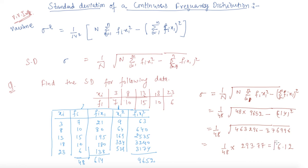You can also check the variance, which is the square of the standard deviation. In this way you can find the standard deviation and variance of the given data. In the next lecture we will discuss analysis of frequency distribution — stay tuned. If you have any doubts, please comment in the comment section. Thank you, happy learning!